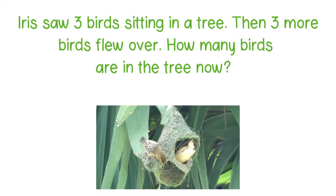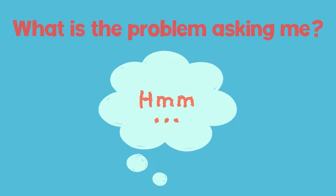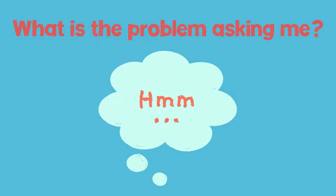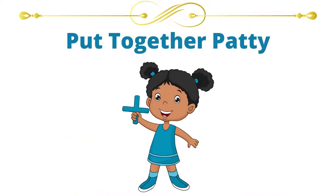Here's the next problem. Iris saw three birds sitting in a tree. Then three more birds flew over. How many birds are in the tree now? First, we need to think about what the problem is asking us to solve. If you said that we need to figure out how many birds are in the tree if you start with three and add three more, then you are correct. Which character can help us with this problem? If you said Put Together Patty, you are also correct. She'll help us remember to add the two sets of numbers. Take a moment to draw a picture to model the problem, to show what happens when you start with three and add three more.